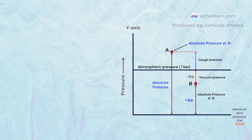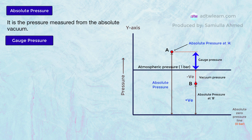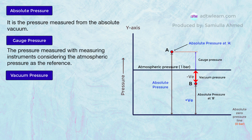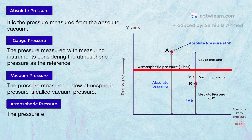Let's summarize. Absolute pressure: it is the pressure measured from the absolute vacuum. Gauge pressure: the pressure measured with measuring instruments, considering the atmospheric pressure as the reference. Vacuum pressure: the pressure measured below atmospheric pressure is called vacuum pressure. Atmospheric pressure: the pressure exerted by the atmospheric air around us is called atmospheric pressure.